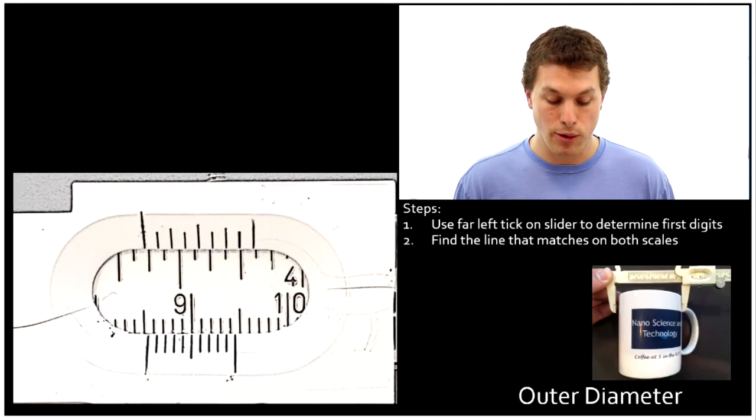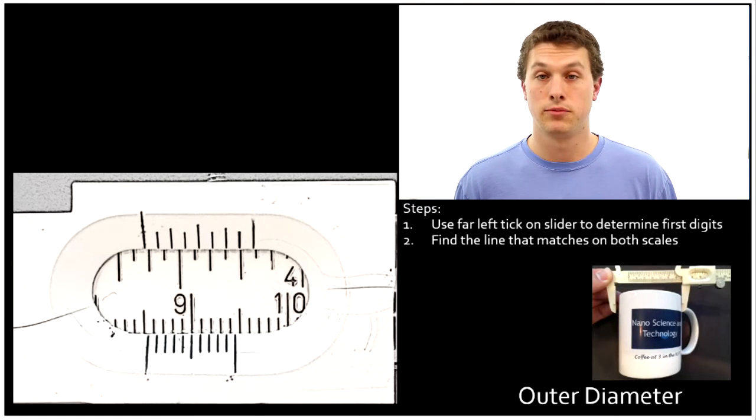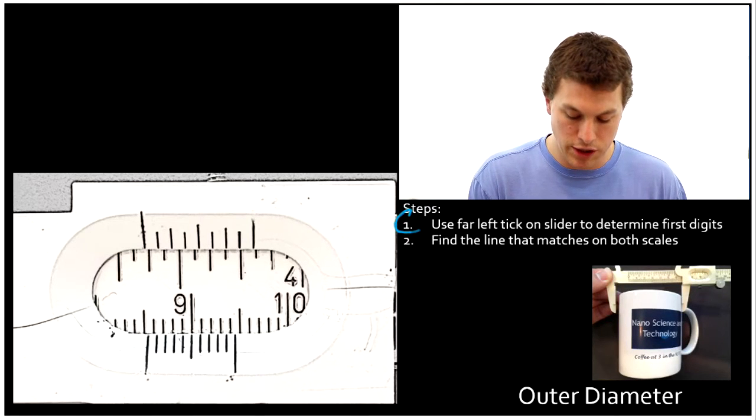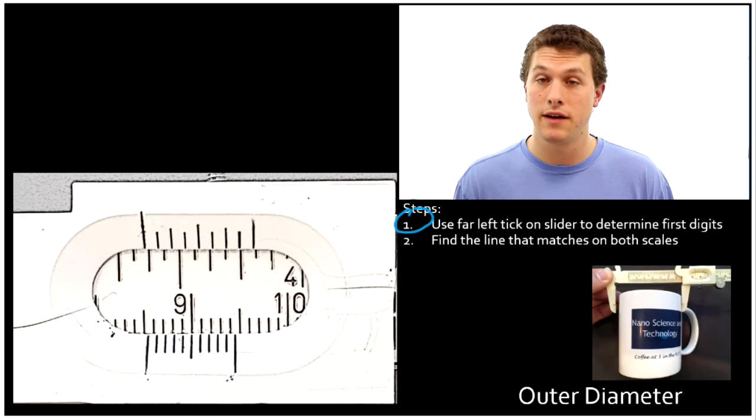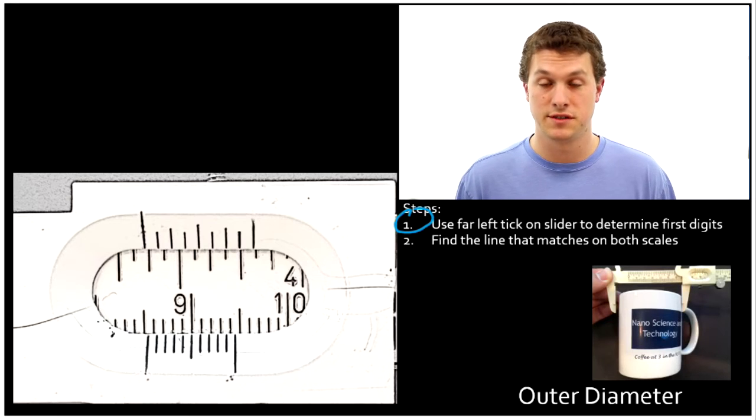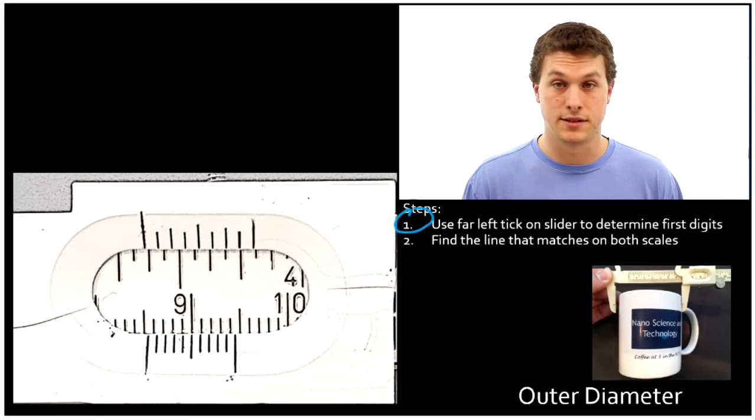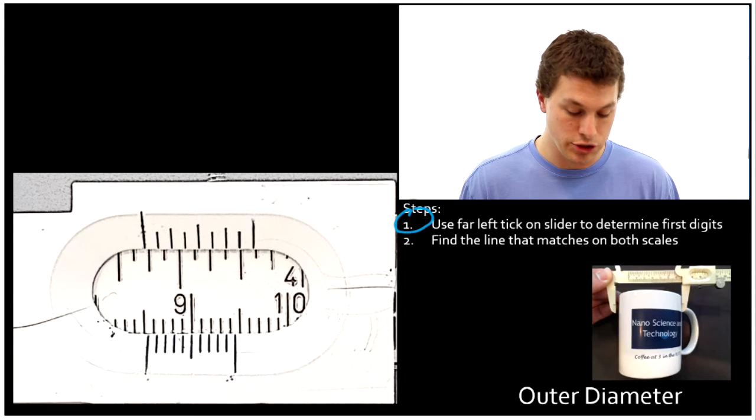Here we're reading the outer diameter of our coffee mug. There's two steps really to reading these calipers. First, we want to use the tick on the far left of the slider, that is on the vernier scale, to make our initial measurement. We're going to read our first few digits that way, and the very last digit we're going to read with all the ticks on the slider.